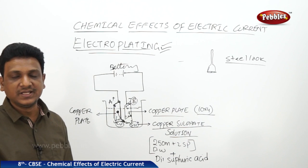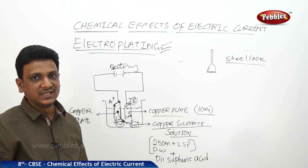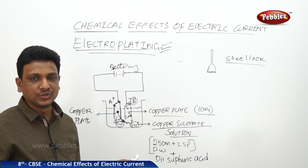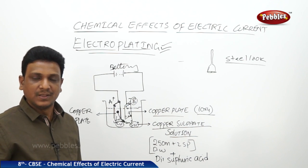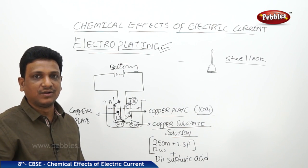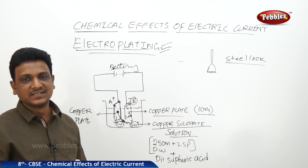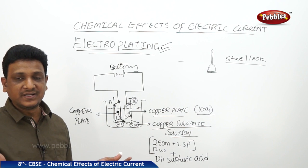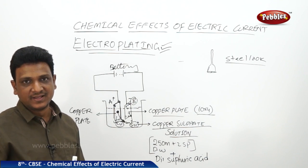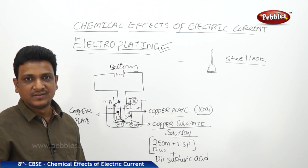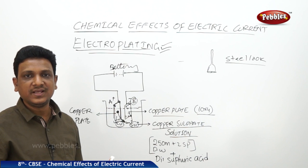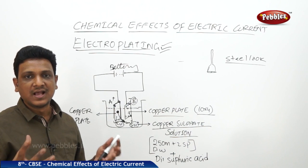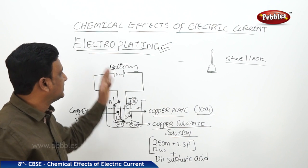This is the chemical effect of electric current and one of its applications. In the same way, an object to be electroplated is taken as one electrode, and the other electrode is the metal you want to deposit. Both are kept in an electrolytic solution, and metal A slowly deposits on metal B — B is coated by A, and this is called electroplating. The coating lasts for some time but will fade off if exposed to salt water or certain chemicals, revealing the original base metal underneath.